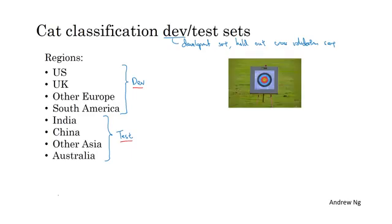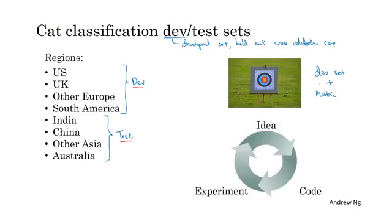One picture to keep in mind is that I think setting up your dev set plus your single row number evaluation metric, that's like placing a target and telling your team where you think is the bullseye you want to aim at. Because what will happen once you've established the dev set and the metric is that the team can iterate very quickly, try different ideas, run experiments, and very quickly use the dev set and the metric to evaluate classifiers and try to pick the best one.